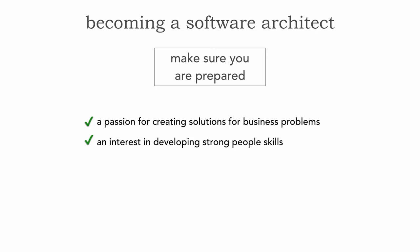It's also about an interest in developing strong people skills. People skills are required as a software architect — there's so much negotiation happening. If you have no interest at all in people skills, this probably isn't a good career path for you. It's also a desire to mentor, coach, and lead teams. If you have no desire to do that and you just like coding up solutions, becoming a software architect will be a very disappointing venture for you. Mentorship, coaching, and leadership is really a key piece.